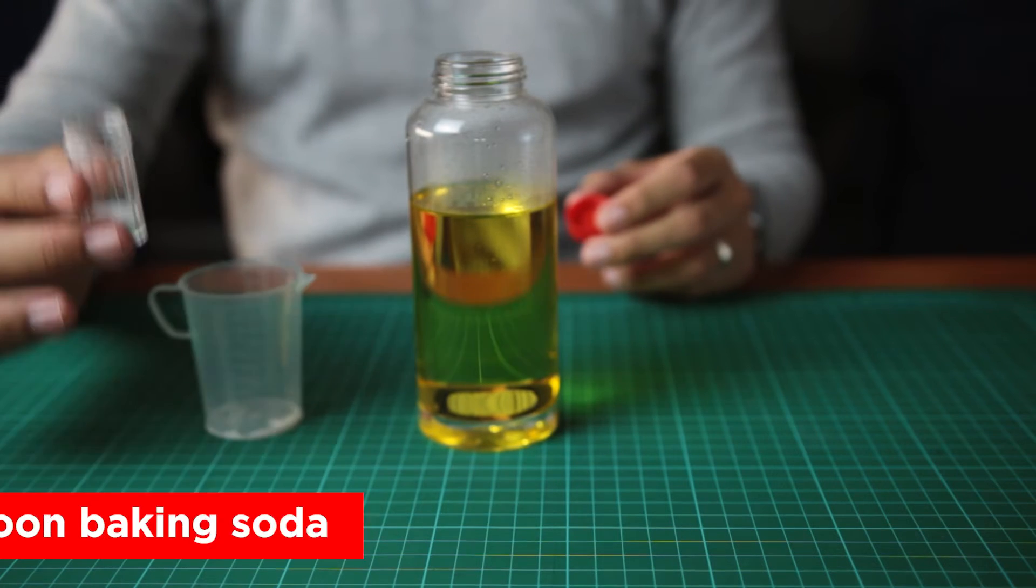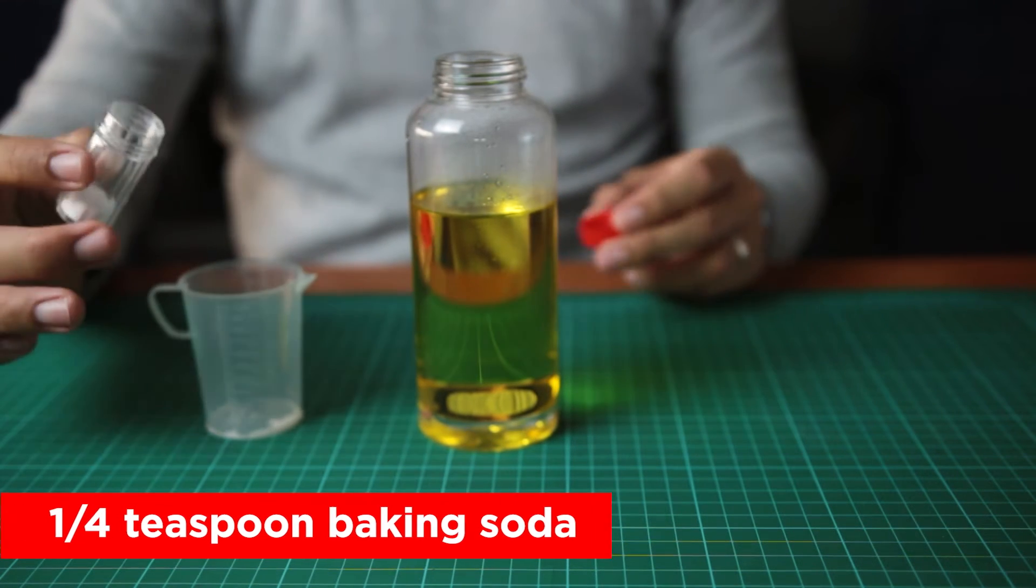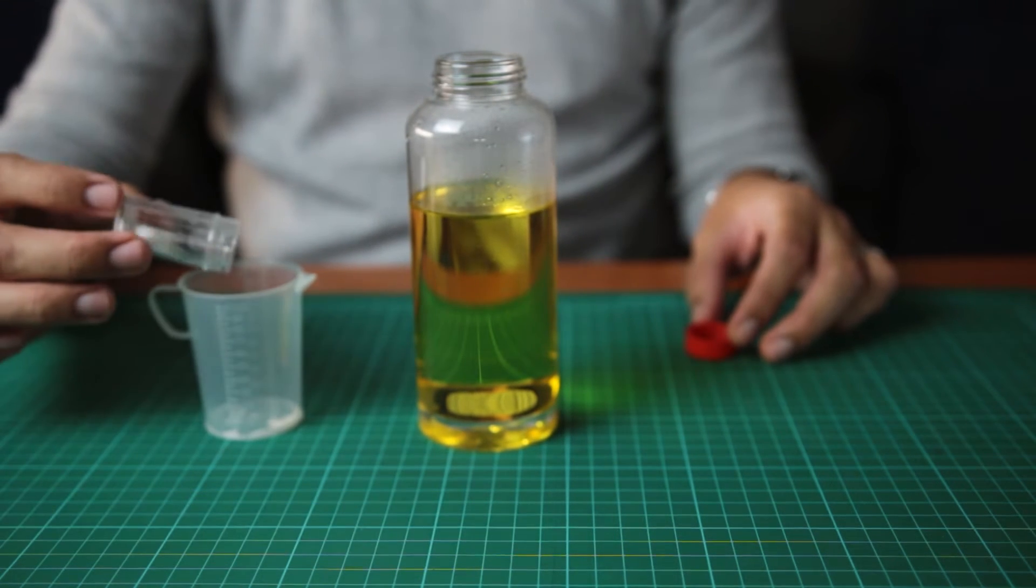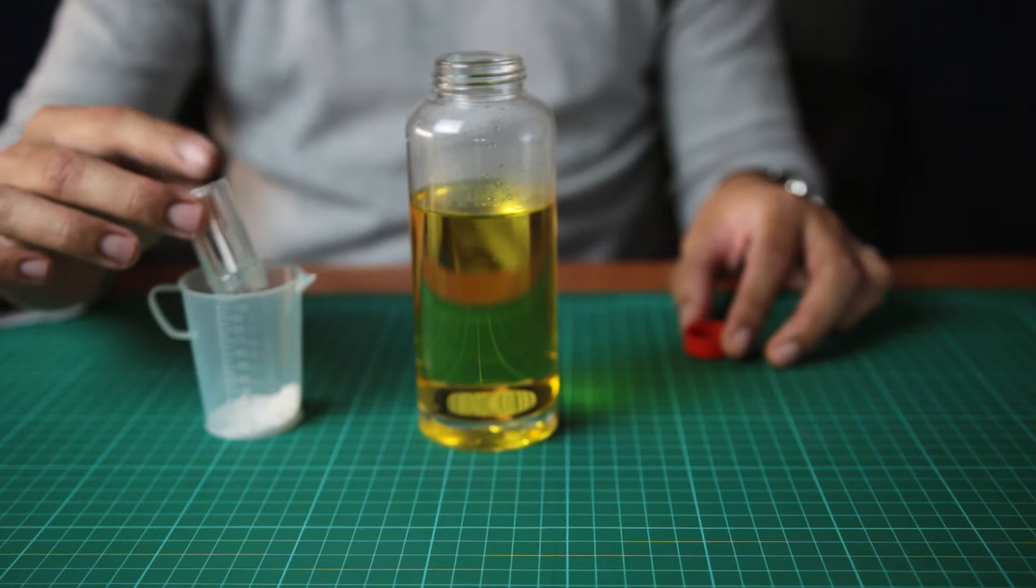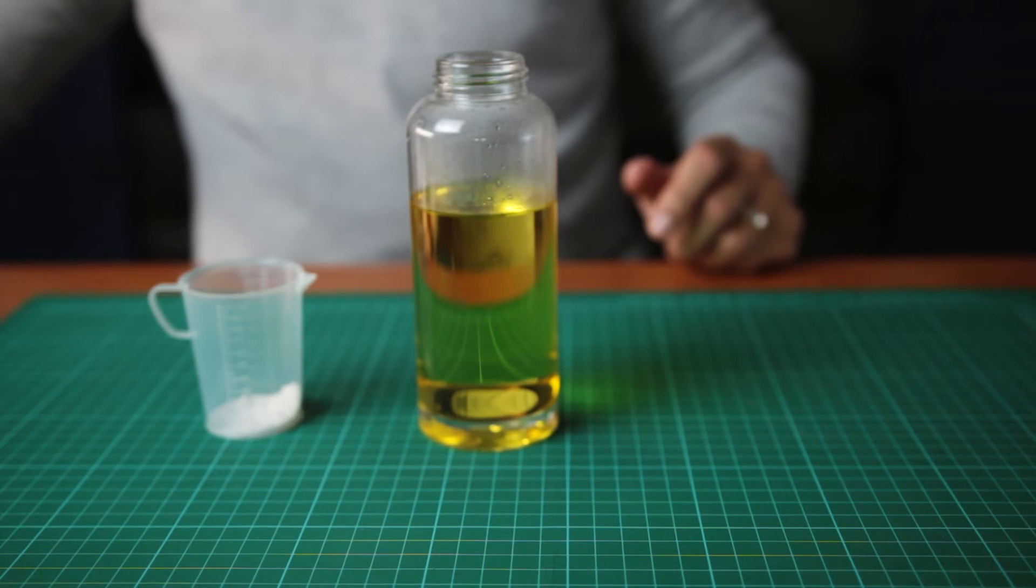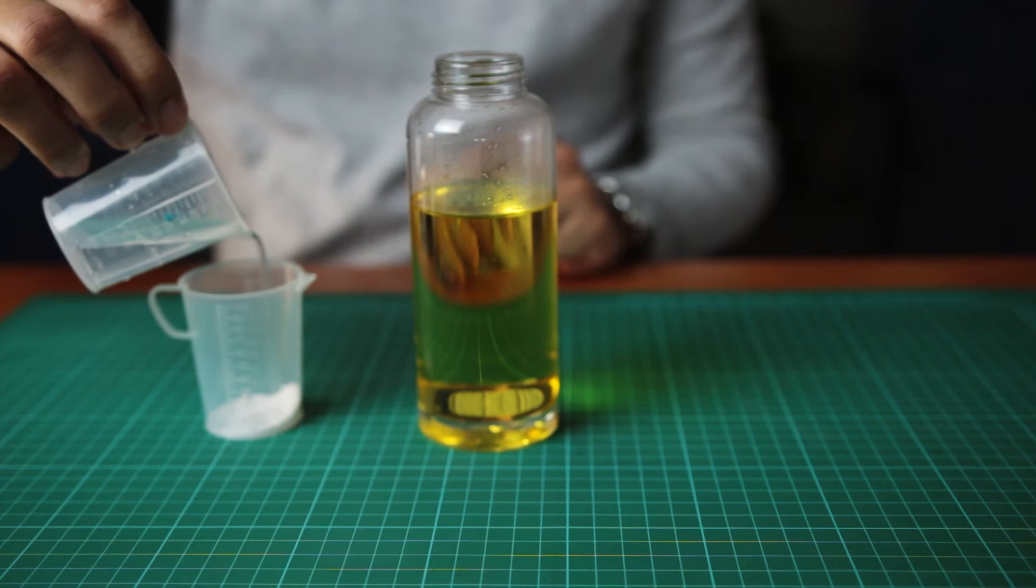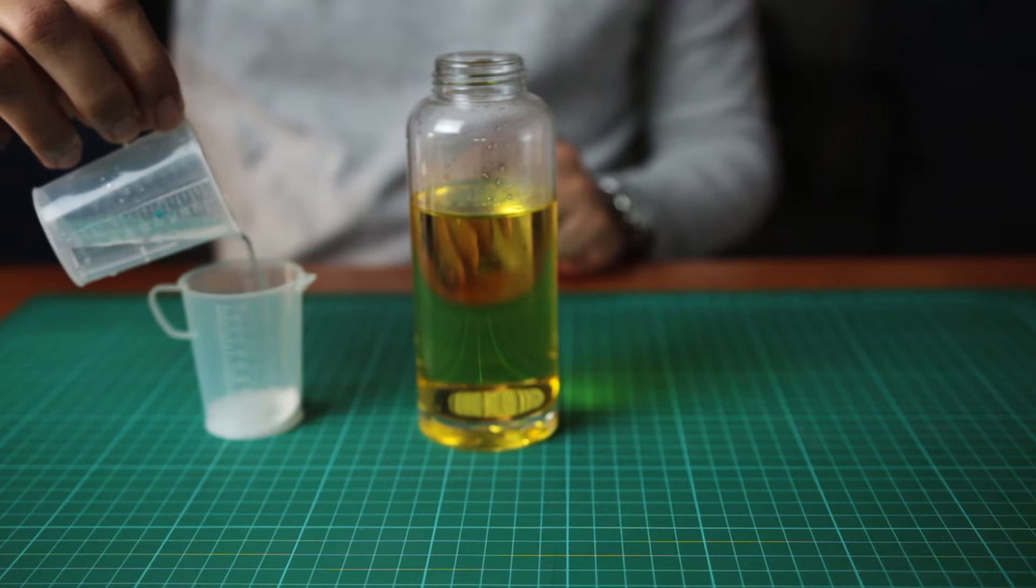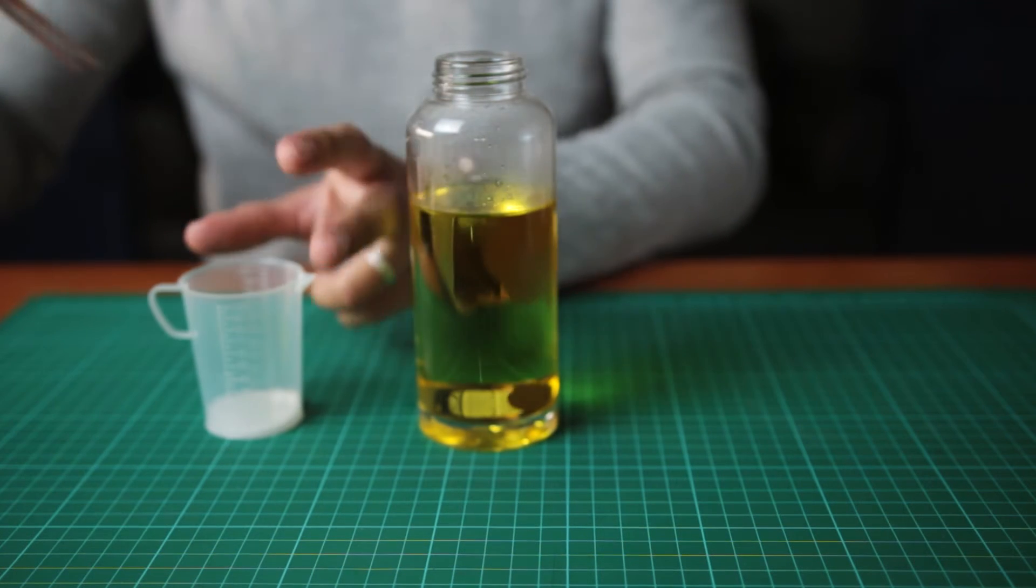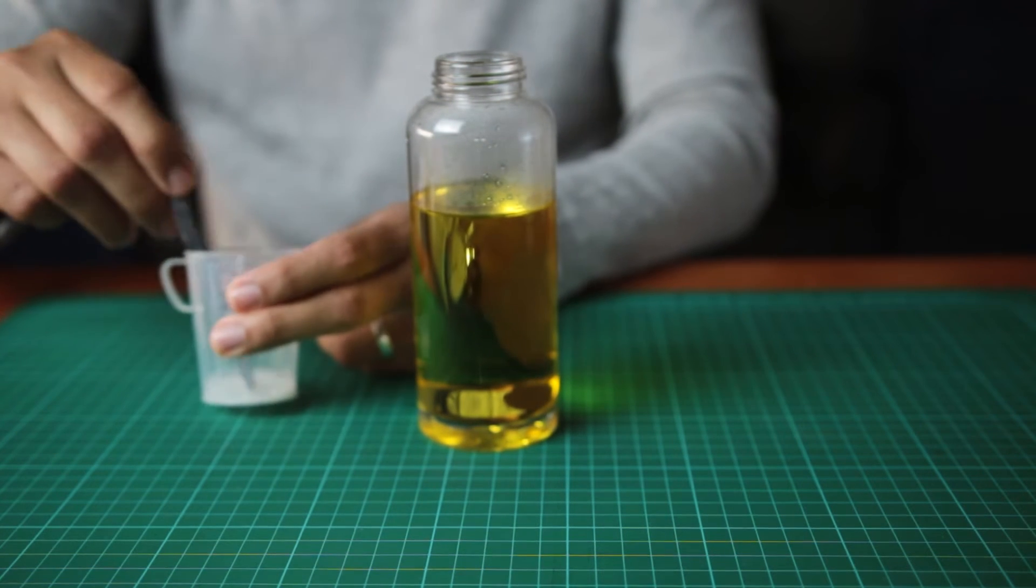Add about a quarter teaspoon of baking soda to a small cup. Add just enough water to dissolve the baking soda. Stir thoroughly.